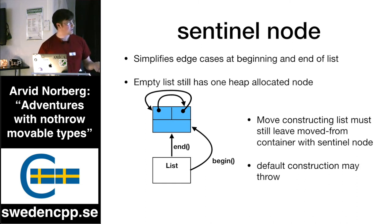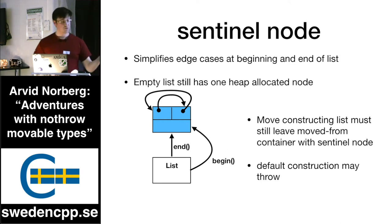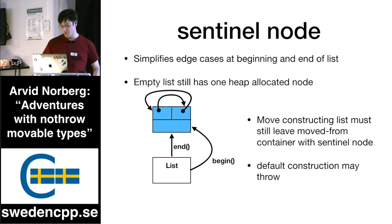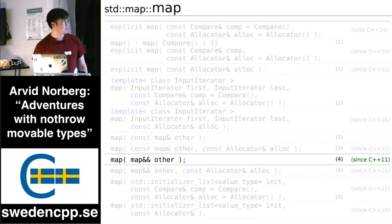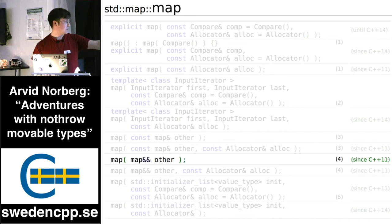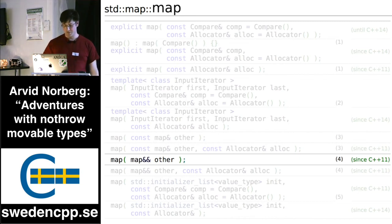This also has the effect that default construction is not free either. If you default-construct an empty map, that may throw an exception. So if you look at the current move constructor for map, it still has not been fixed — it's not `noexcept`.